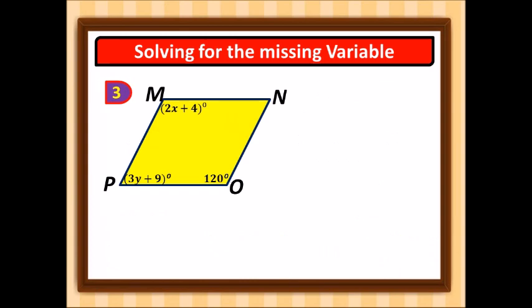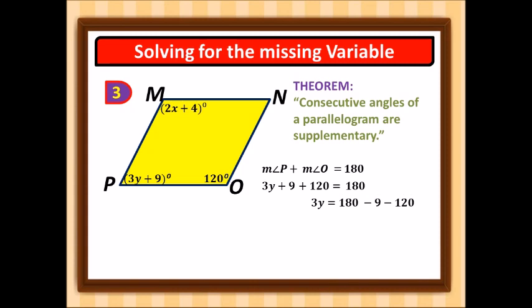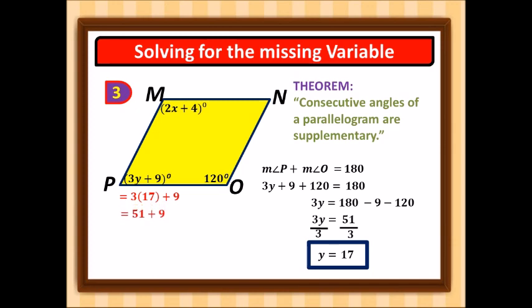Number three: find x and y. Consecutive angles of a parallelogram are supplementary, so angle P plus angle O equals 180. With angle P equal to 3y plus 9 and angle O equal to 120, we get 3y equals 51, so y equals 17. Substituting: 3 times 17 plus 9 equals 60 degrees.